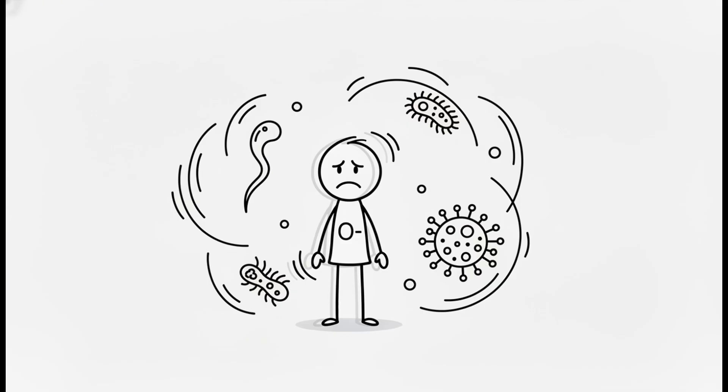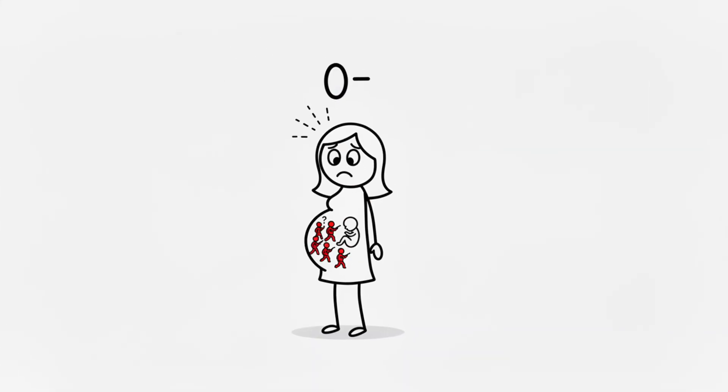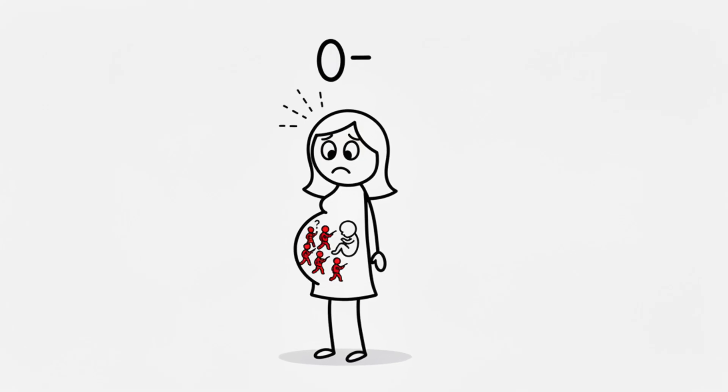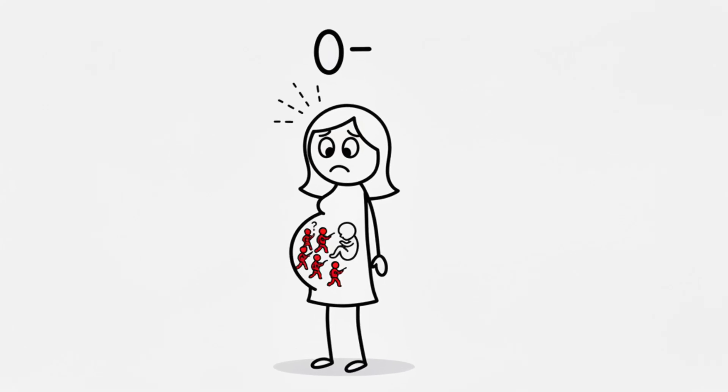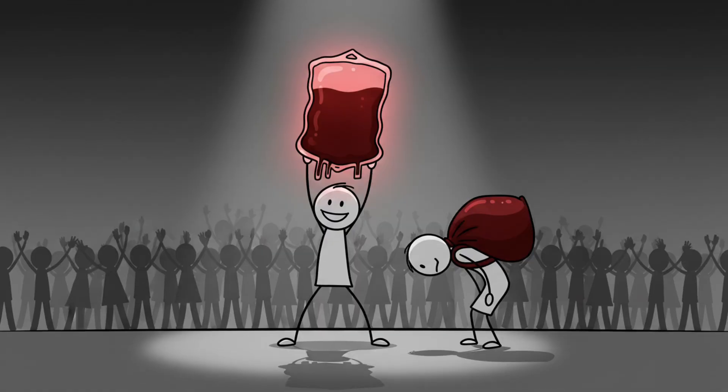You're also more vulnerable to severe cholera and norovirus infections. And if you're a woman, pregnancy becomes high risk. If you carry an RH-positive baby, your immune system may attack it, seeing the baby's blood as foreign. Before modern medicine, this was often fatal. O negative donors are humanity's silent protectors. Universal saviors carrying a profound personal cost.